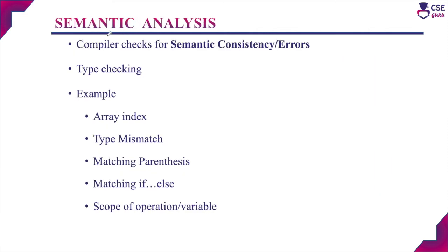The third phase is semantic analysis. The parse tree produced by the syntax analyzer is given as input to the semantic analyzer, which checks for semantic consistency or semantic errors in the source code. The semantic analyzer also performs type checking: identifiers and their data types stored in the symbol table are used to verify types. If there is any type mismatch, that error is raised and reported to the user. For example, an array index value must always be an integer, not a floating point value — this is checked by the semantic analyzer.